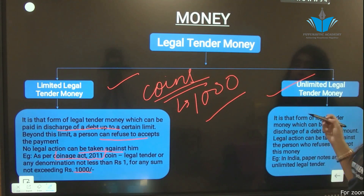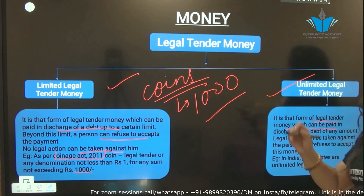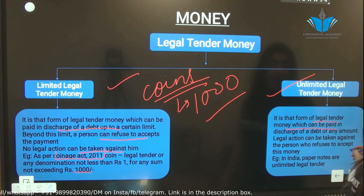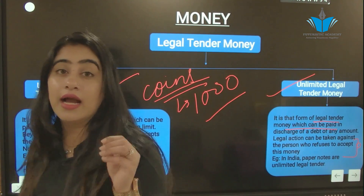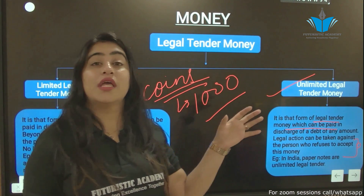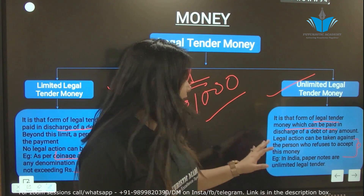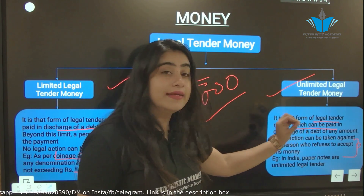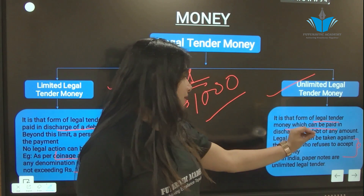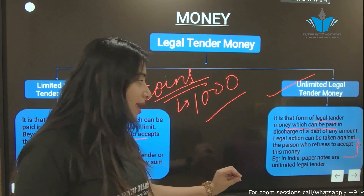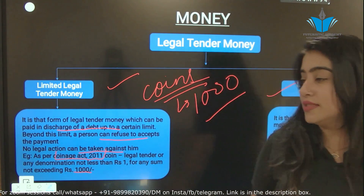Now for unlimited legal tender money: this is the form of legal tender money which can be used to pay debts of any amount, and no person can ever refuse to accept this money. It is that form of legal tender money which can be paid in discharge of a debt of any amount, and legal action can be taken against any person who refuses to accept it. In India, paper notes are unlimited legal tender money.